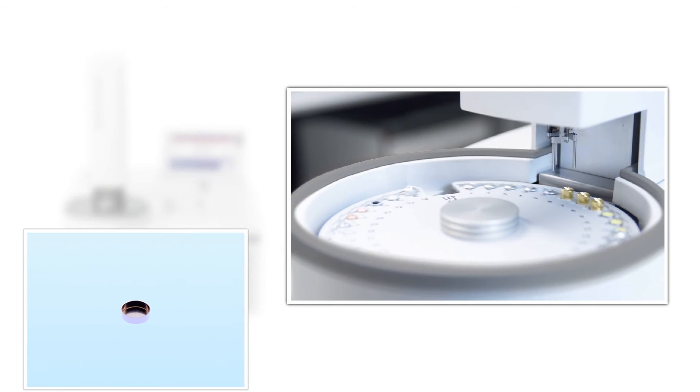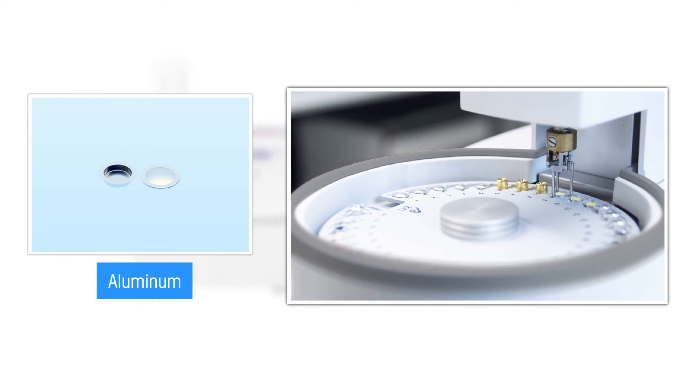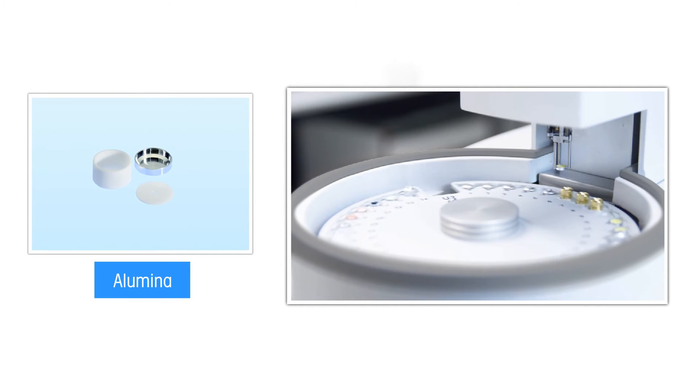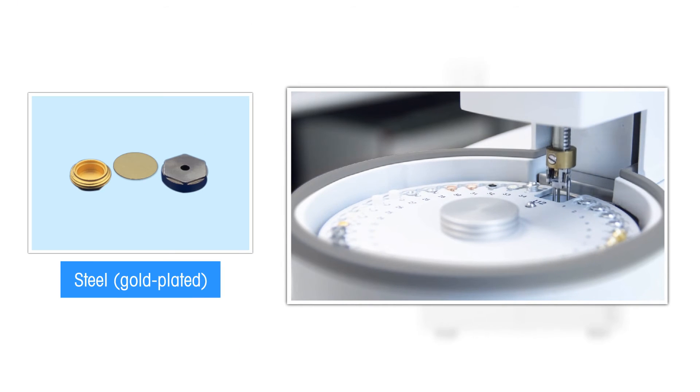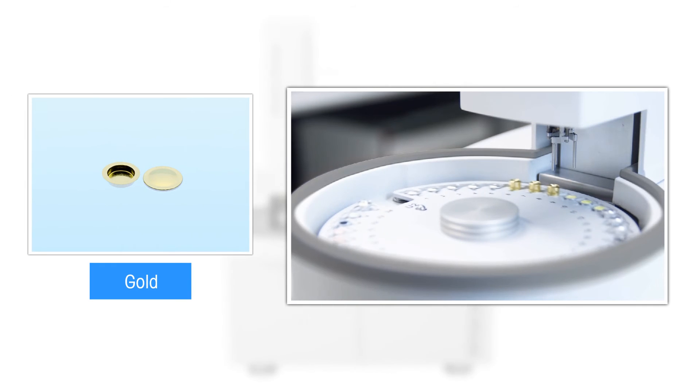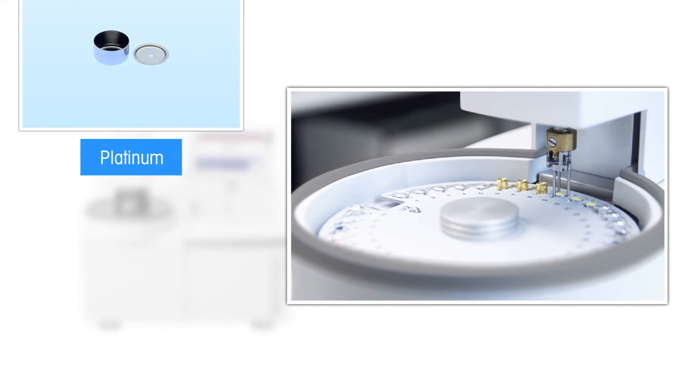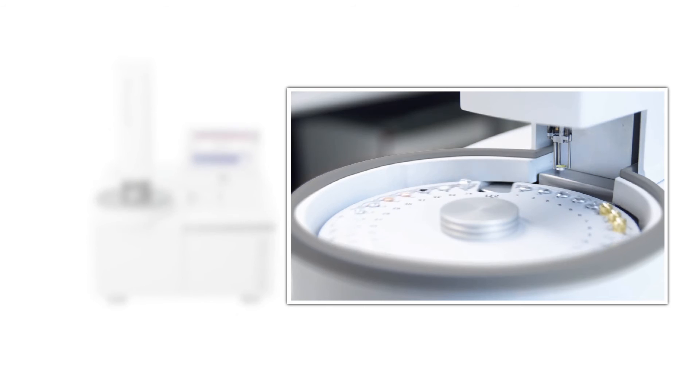As a result, running your samples using different crucibles from the wide selection offered by Mettler Toledo can be done very efficiently using the benefits of FlexCal. No extra adjustment is necessary, thereby saving you valuable measurement time for other analyses.